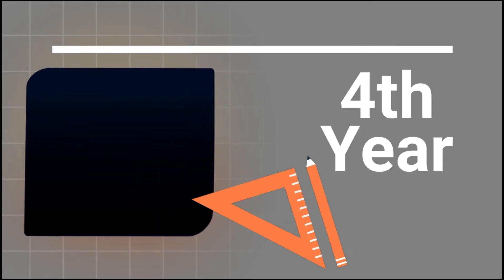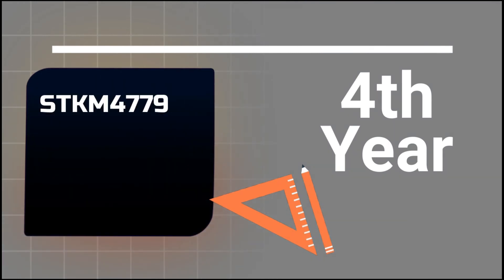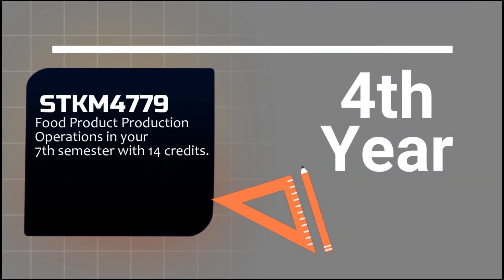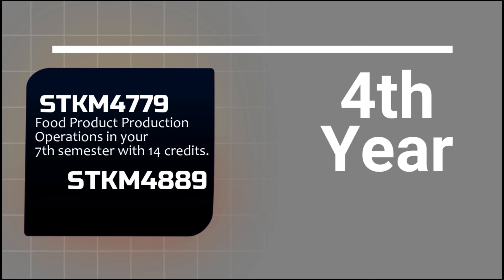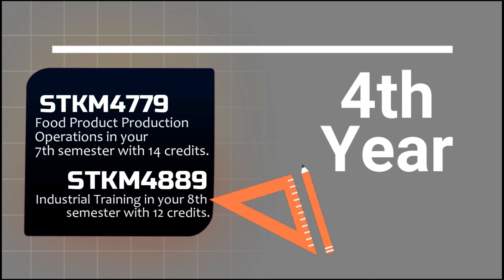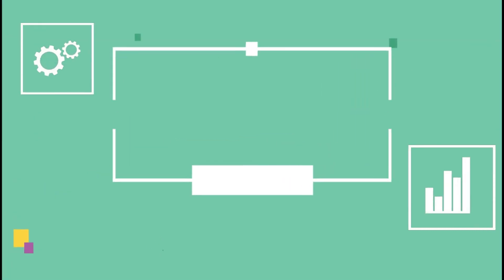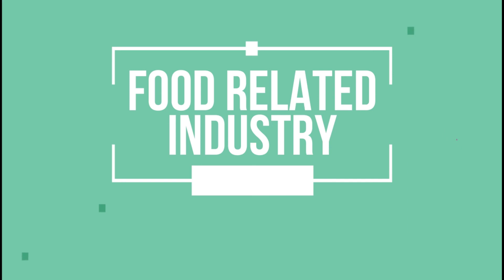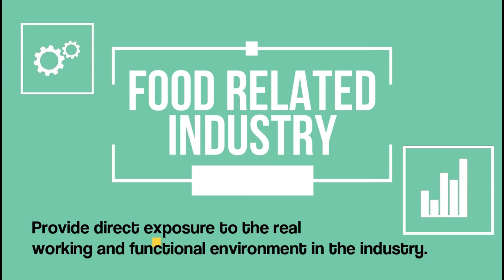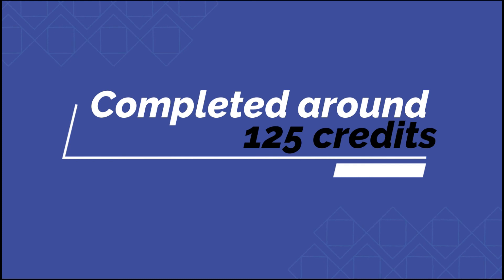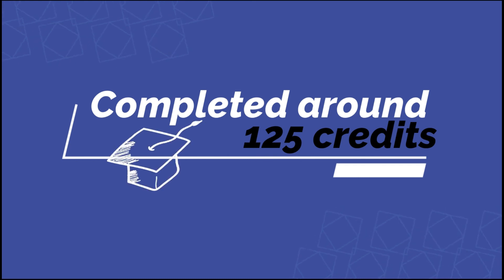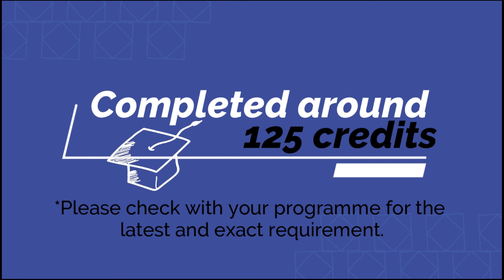In your fourth year, you will register for STKM4779 Food Product Production Operations in your seventh semester with 14 credits, and STKM4889 Industrial Training in your eighth semester with 12 credits. For both courses, students will be placed in a food-related industry, providing direct exposure to the real working and functional environment. At the end of your studies, you must have completed around 125 credits with the correct categorisation to graduate. Please check with your programme for the exact requirements.